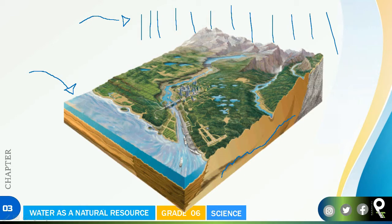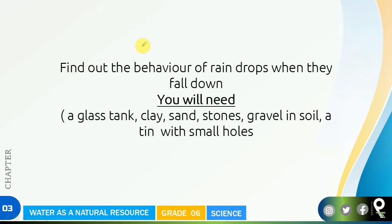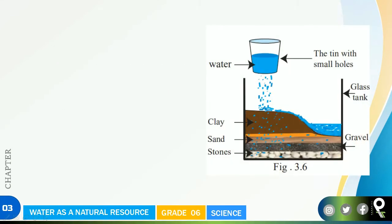When rain falls, the streams will get water, the ponds will get water, and the lakes will get water. On top of that, another form of water goes deep inside the soil - that's what we are going to understand. To find out the behavior of raindrops when they fall down, you will need: a glass tank, clay, sand, stones, gravel, soil, and a tin with a small hole.